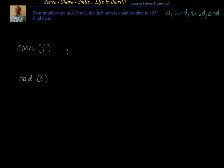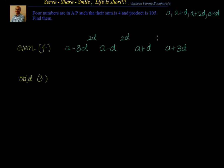For even numbers, we choose them as a minus 3d, a minus d, a plus d, a plus 3d. These four numbers are in arithmetic progression because the common difference is 2d everywhere. You start with a number and keep adding 2d, so you are in arithmetic progression.